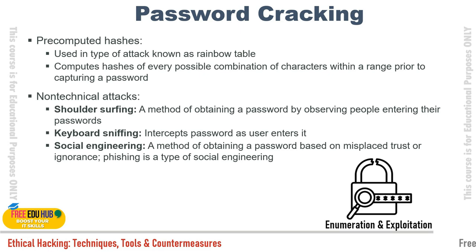Pre-computed hashes are used in rainbow table attacks. The computer generates hashes of every possible combination of characters within a range prior to capturing the target password. Once the attacker captures the password hash from the network, they compare it against the pre-generated hashes — typically revealing the password within moments. However, rainbow tables take substantial time to generate — sometimes days to compute all hash combinations ahead of time. Tools that use rainbow tables include L0phtCrack and RainbowCrack.